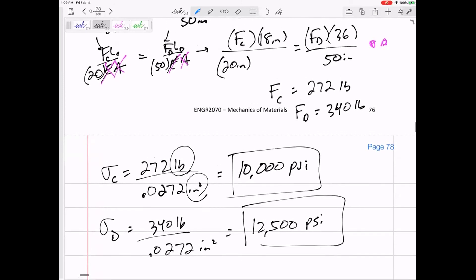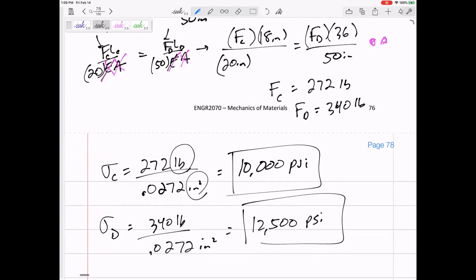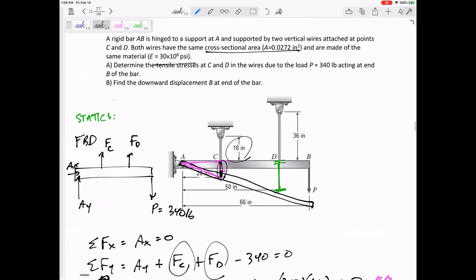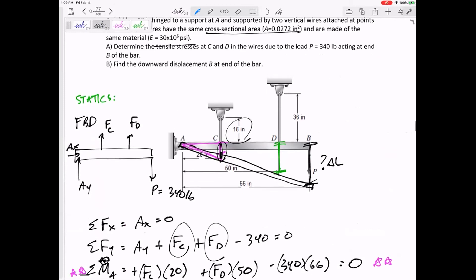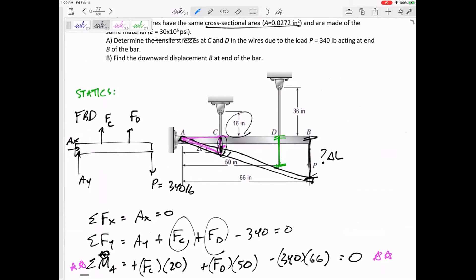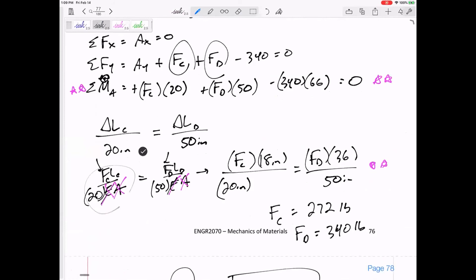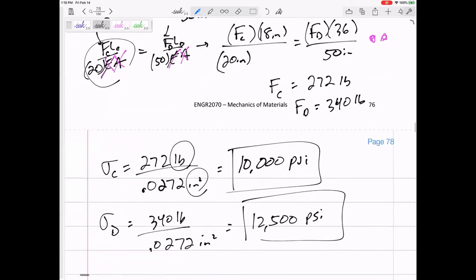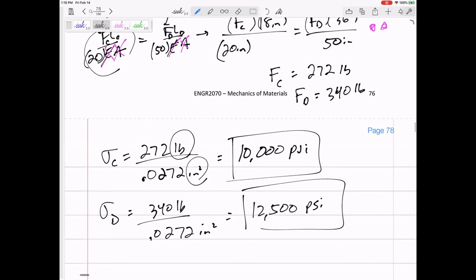I don't think I have the answer to part B. Find the downward displacement of B at the end of the bar. So if we wanted to find this delta L, then it still is a ratio. That delta L over 66 would be equal to FL over EA over 20 or the FL over EA over 50.